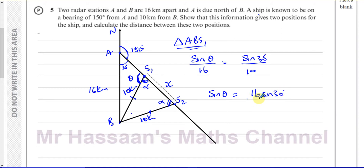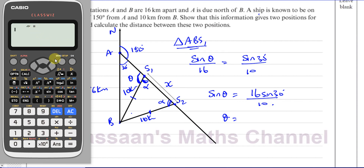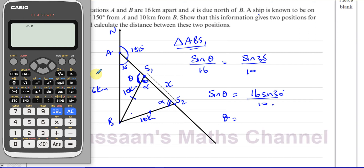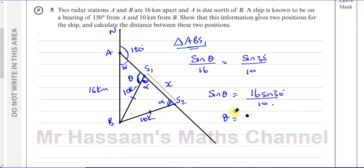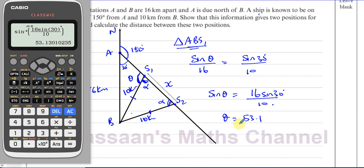I need to take out the calculator. Make sure it's in degree mode — press shift, menu, angle unit, and change it to degree mode. We press shift and the sine button and we have 16 sine 30 divided by 10. That gives us 53.13 degrees. I'll write it to a few more decimal places than needed and keep the answer in my calculator since we're going to use it again. So that's the angle theta.